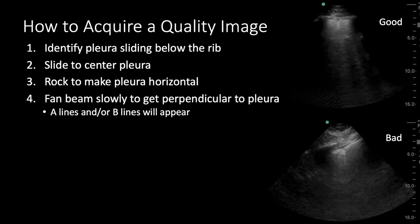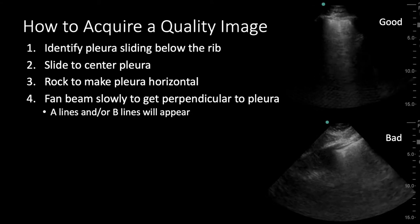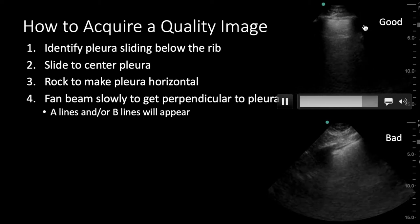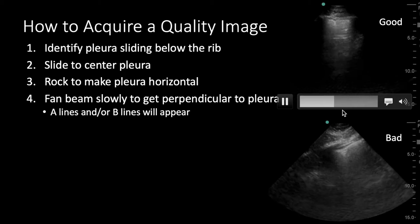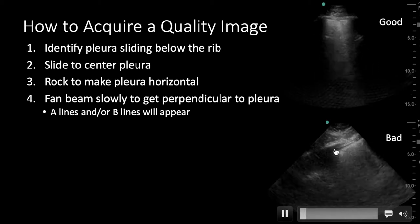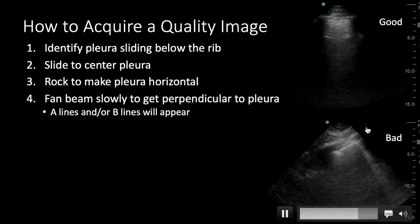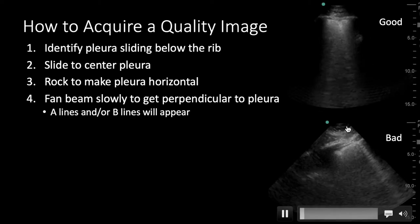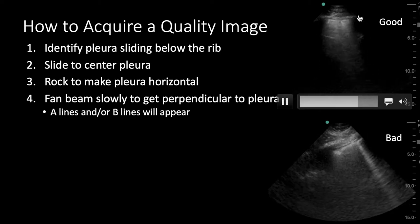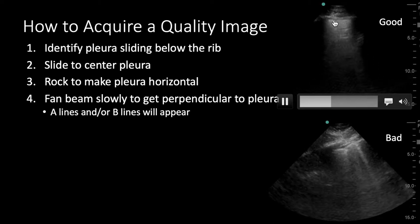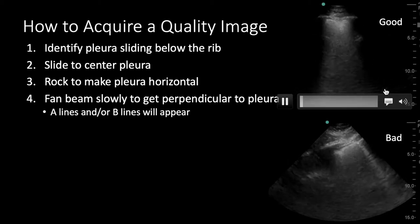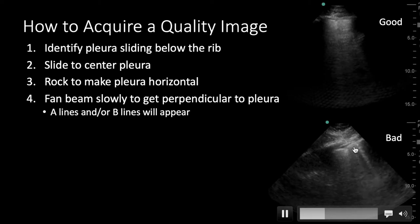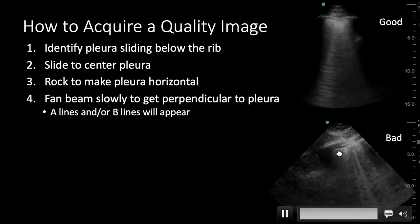So how do we acquire this image? It doesn't come naturally — you've got to work for it. When you put the probe on the chest, you want to identify the pleura: that bright white line under the ribs. You want to slide either towards the head or towards the feet to try to center this pleura in the middle of the screen. Here's a nice well-centered pleura with ribs on the side and the pleural line right in the middle. Next, once you've centered the pleura, you can rock the probe to make it more horizontal.